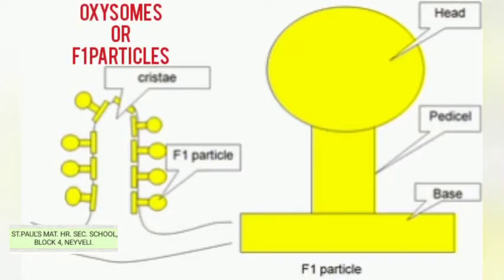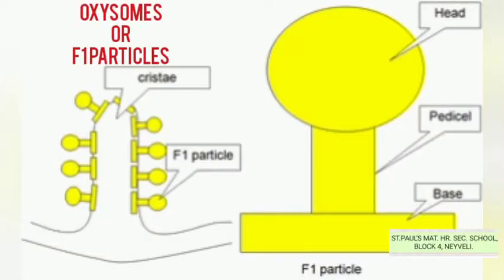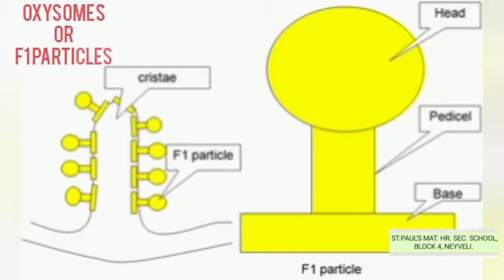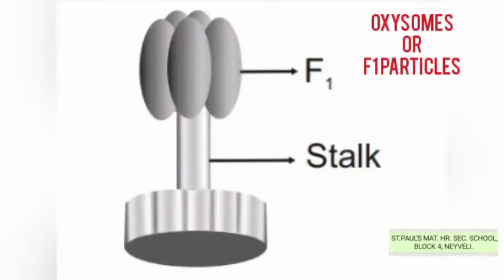The inner mitochondrial membrane has minute, regularly spaced tennis racket-shaped particles known as oxysomes or F1 particles. They are involved in ATP synthesis.